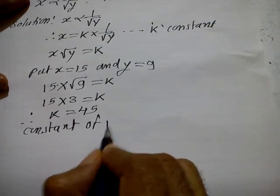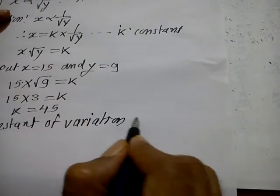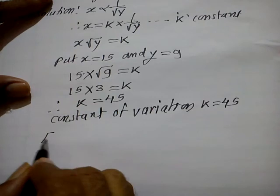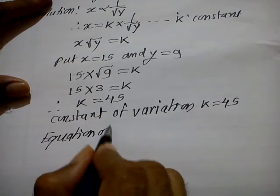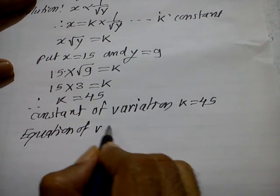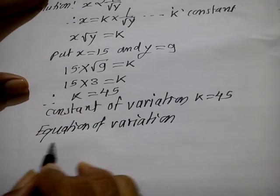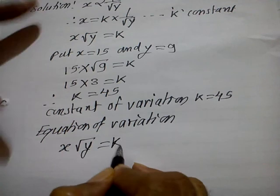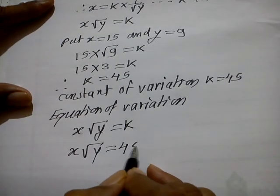The constant of variation K is equal to 45. The equation of variation is X into root Y is equal to 45.